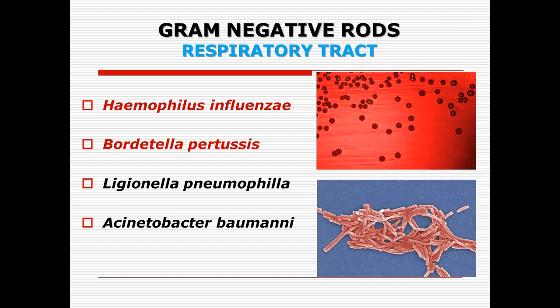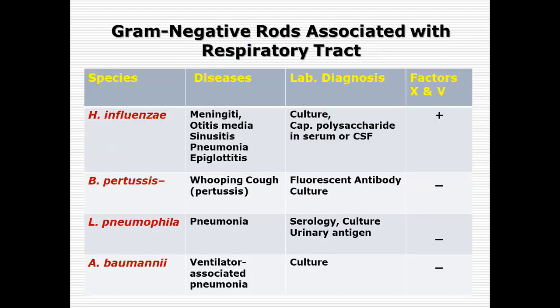The four more important genera associated with respiratory tract infections are Haemophilus, Bordetella, Legionella, and Acinetobacter. Haemophilus is a genus and the clinically significant organism is Haemophilus influenzae. We have other species: Haemophilus parainfluenzae, Haemophilus aegypticus, and Haemophilus ducreyi. In Bordetella, the important organism is Bordetella pertussis that causes whooping cough. In Legionella, the important organism is Legionella pneumophila, and in Acinetobacter we have Acinetobacter baumannii.